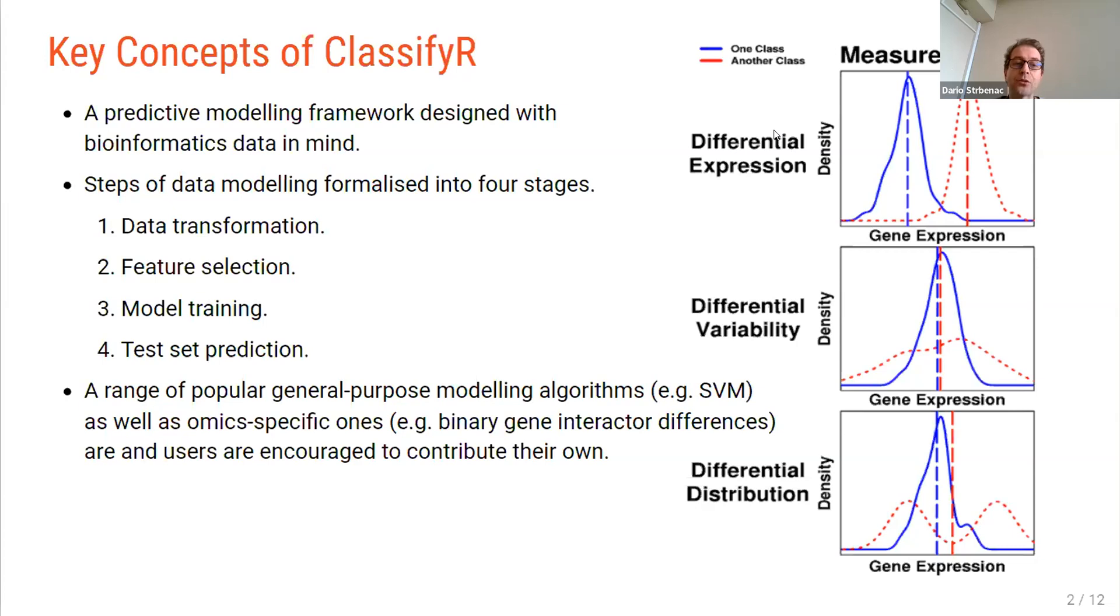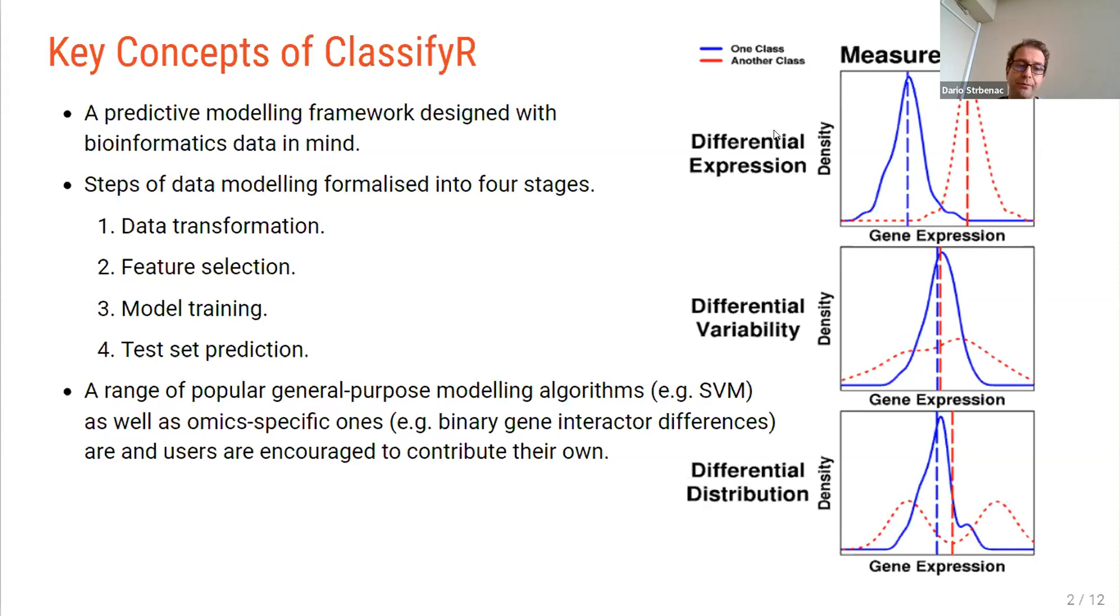So there are a range of popular general purpose modeling algorithms such as SVM, as shown by Yue, as well as omics specific ones. For example, you could calculate the differences in abundance values between binary gene interactors that you've obtained from a protein protein interaction database, for example. And users can also contribute their own via Git pull requests.